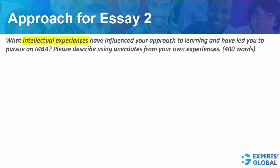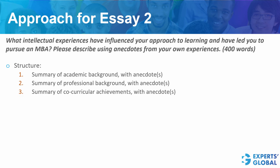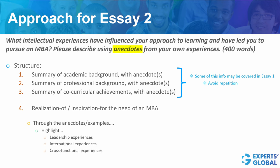Approach for the second essay: it is largely about your intellectual experiences while ensuring specific anecdotes, and how the same have inspired you to pursue an MBA. A possible structure: start with a summary of your academic background with anecdotes, then a summary of your professional background with anecdotes, then a summary of co-curricular achievements with anecdotes. Remember, some of the information here may have already been covered in the first essay — please avoid repetition. Then talk about the realization of or the inspiration for the need of an MBA. Quoting specific anecdotes is crucial here, and through these anecdotes or examples, please ensure highlighting your leadership experiences, international experiences, cross-functional experiences, and cross-cultural experiences. Wherever possible, please quantify.